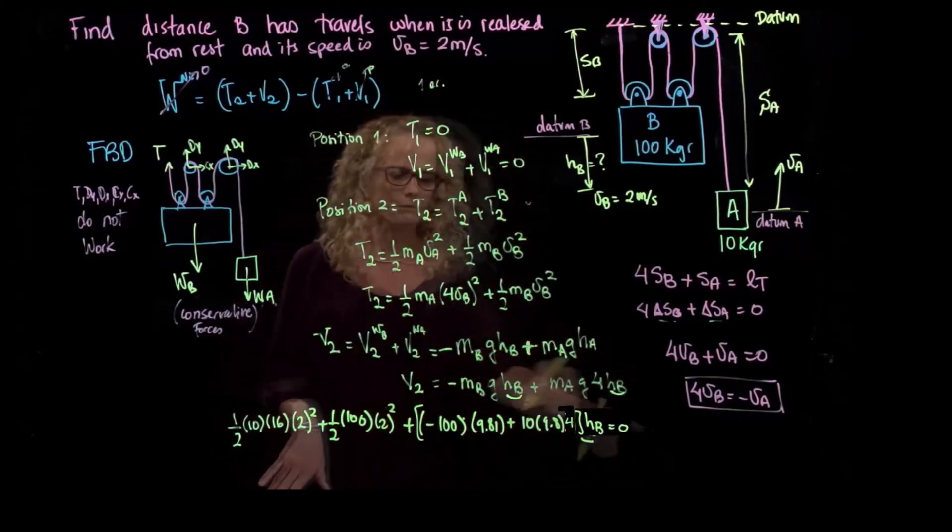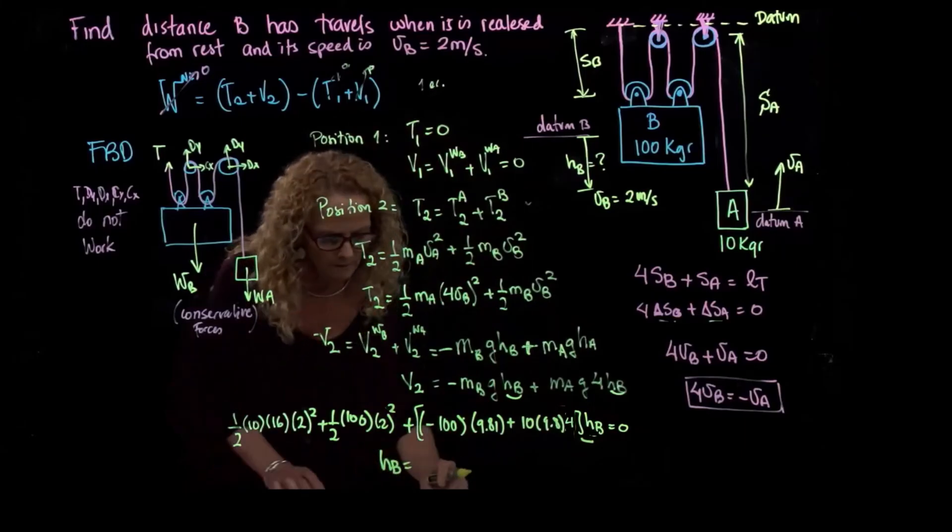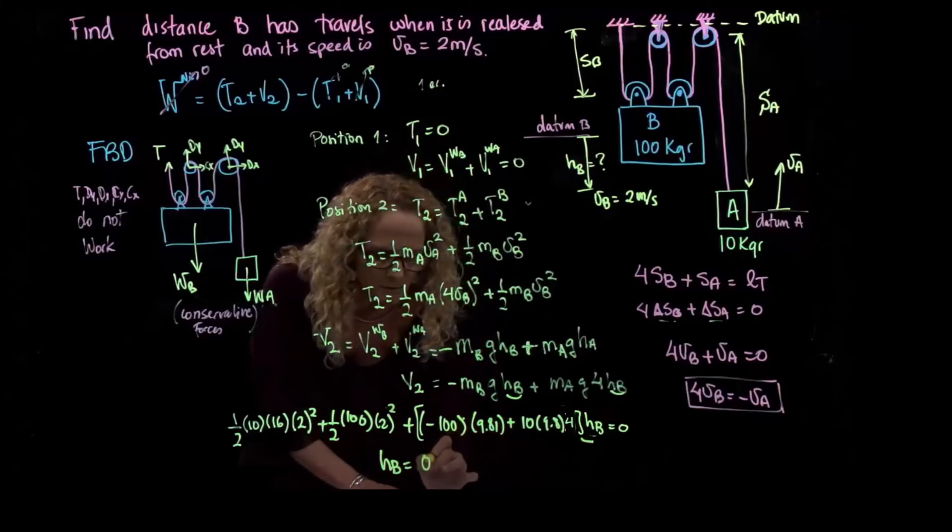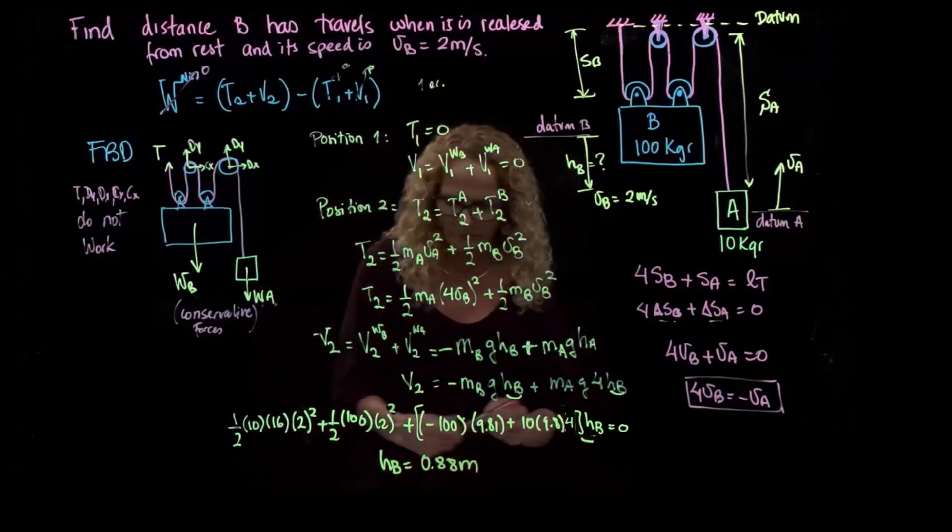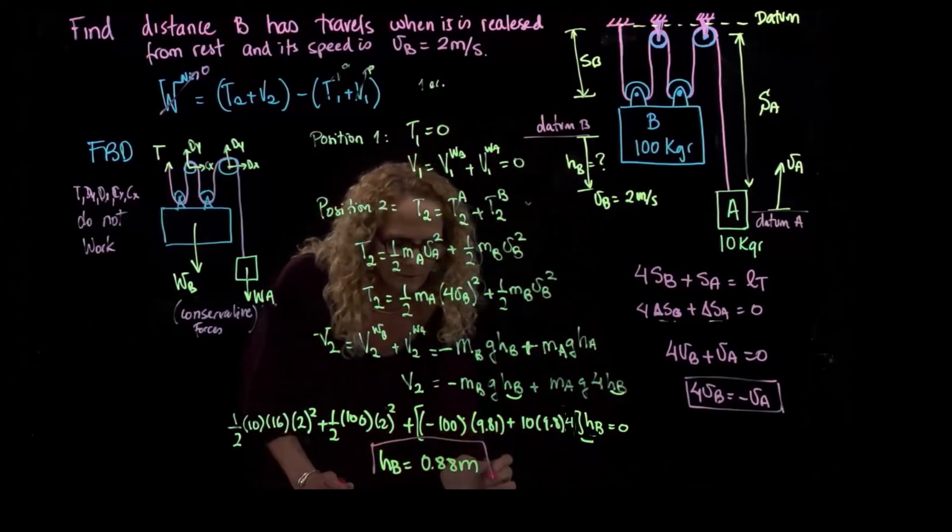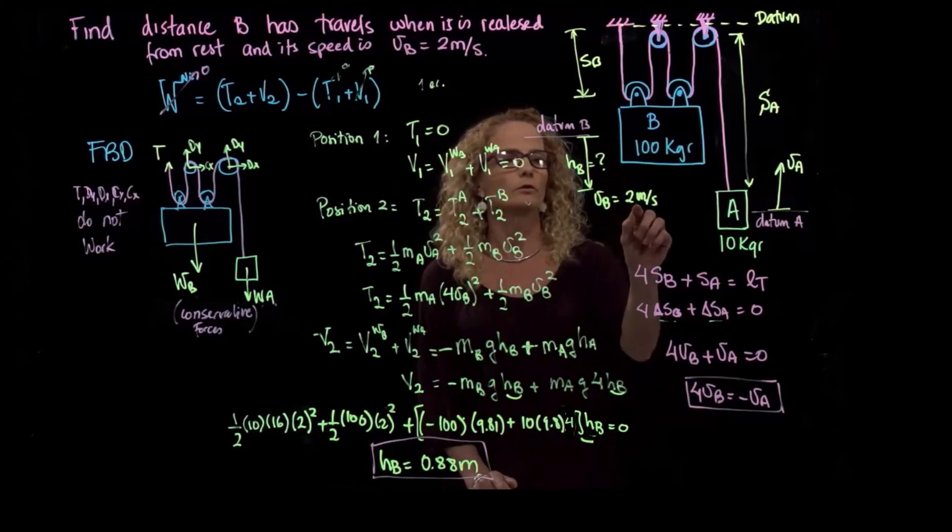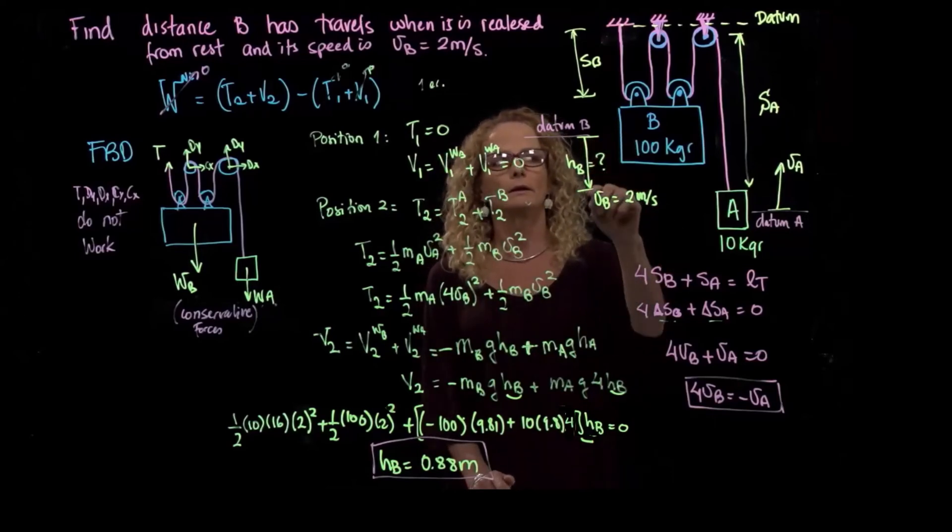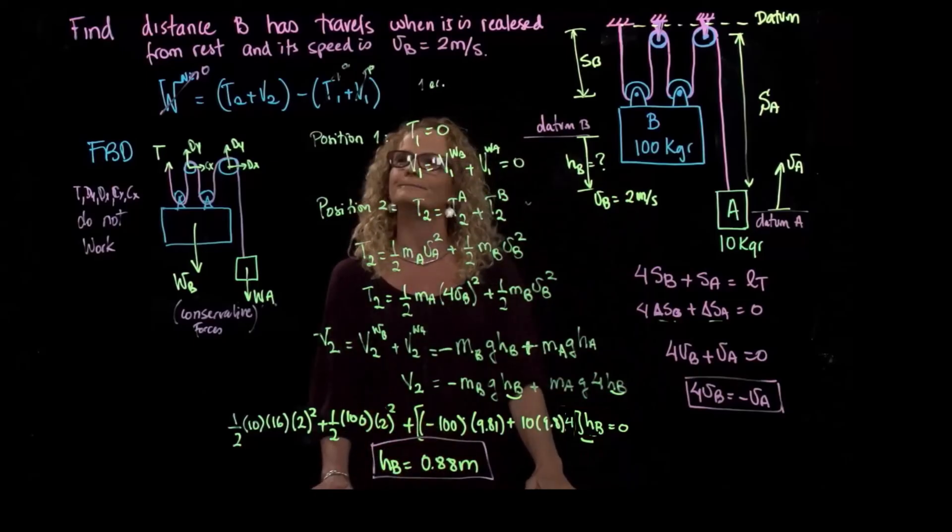So it's very easy to solve for HB. I just put that to the other side of the equation, divided by that, and I get that HB is equal to 0.88 meters. When the block B reached a velocity of 2 meters per second, it was when it went down 0.88 meters.